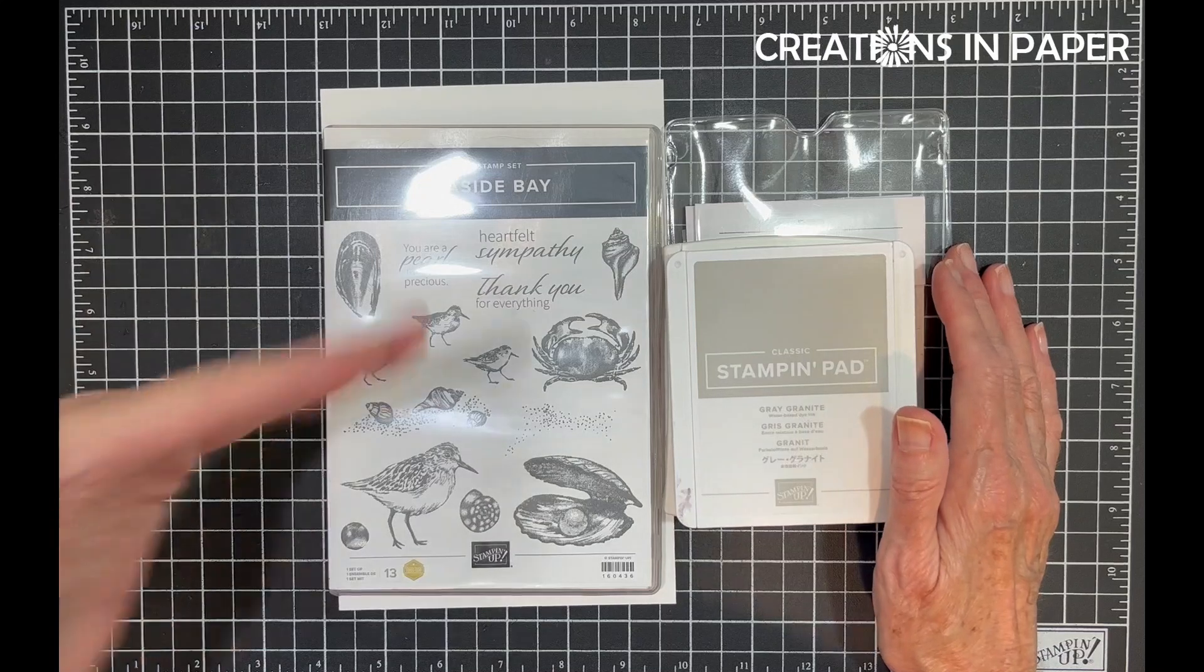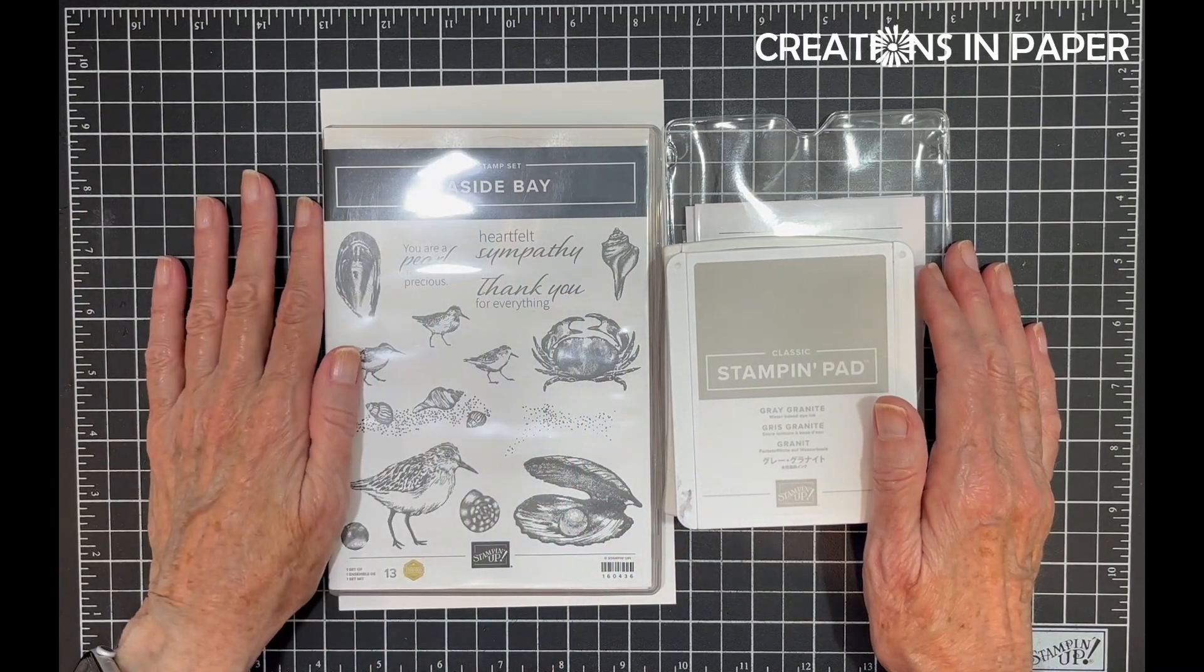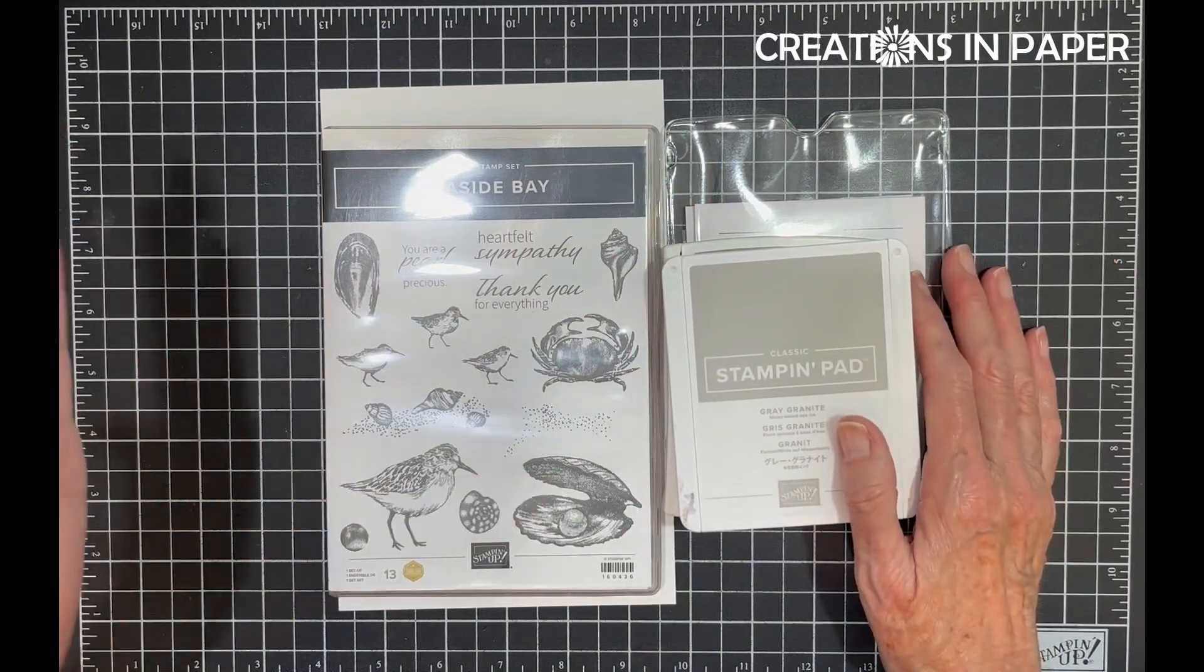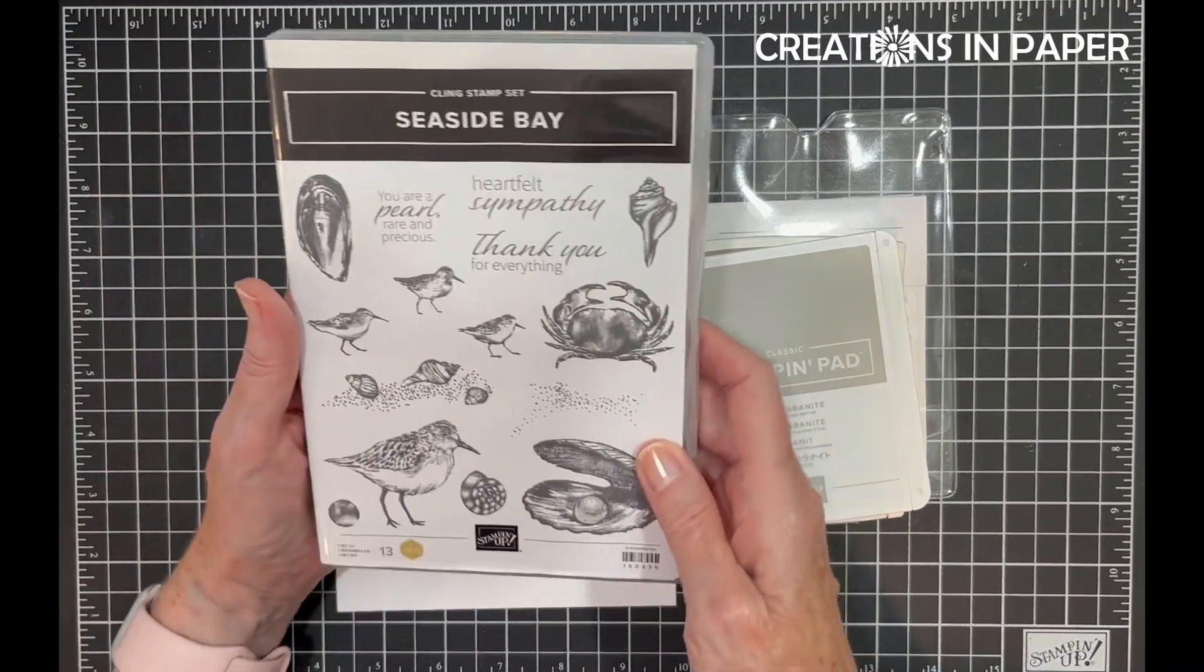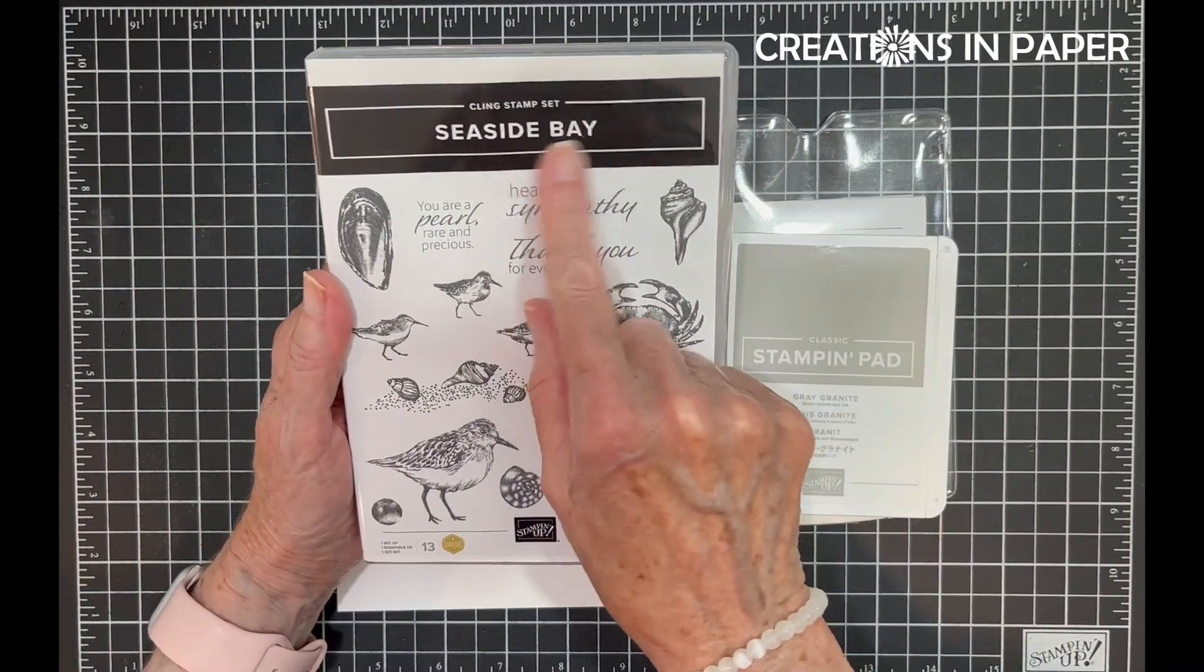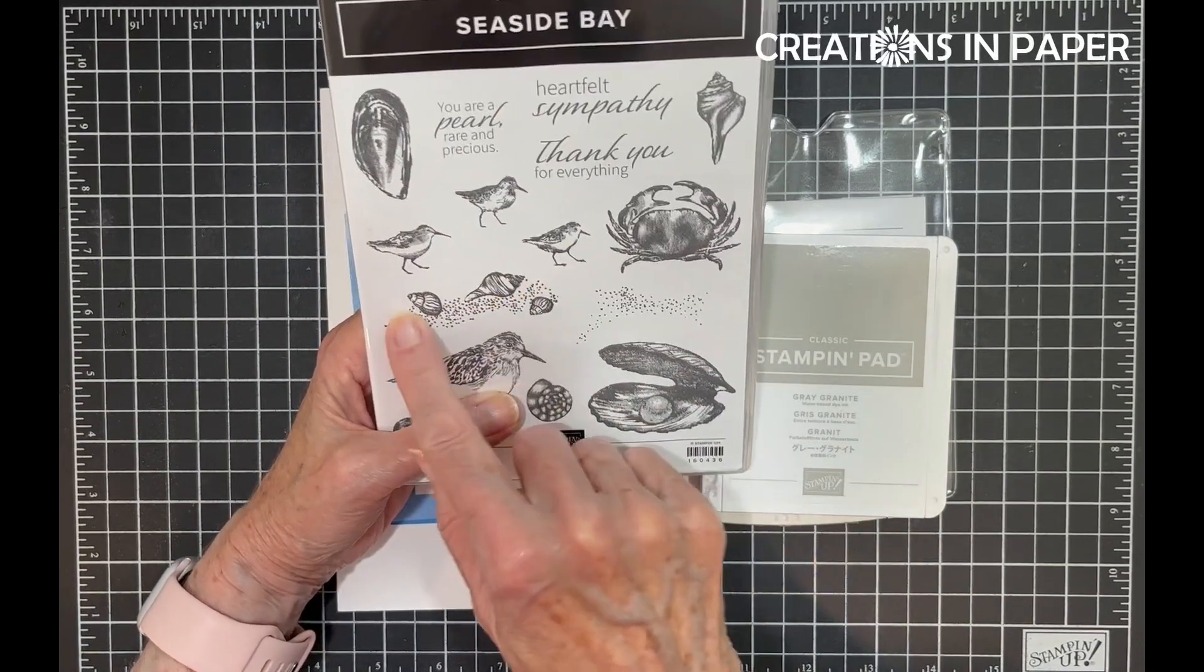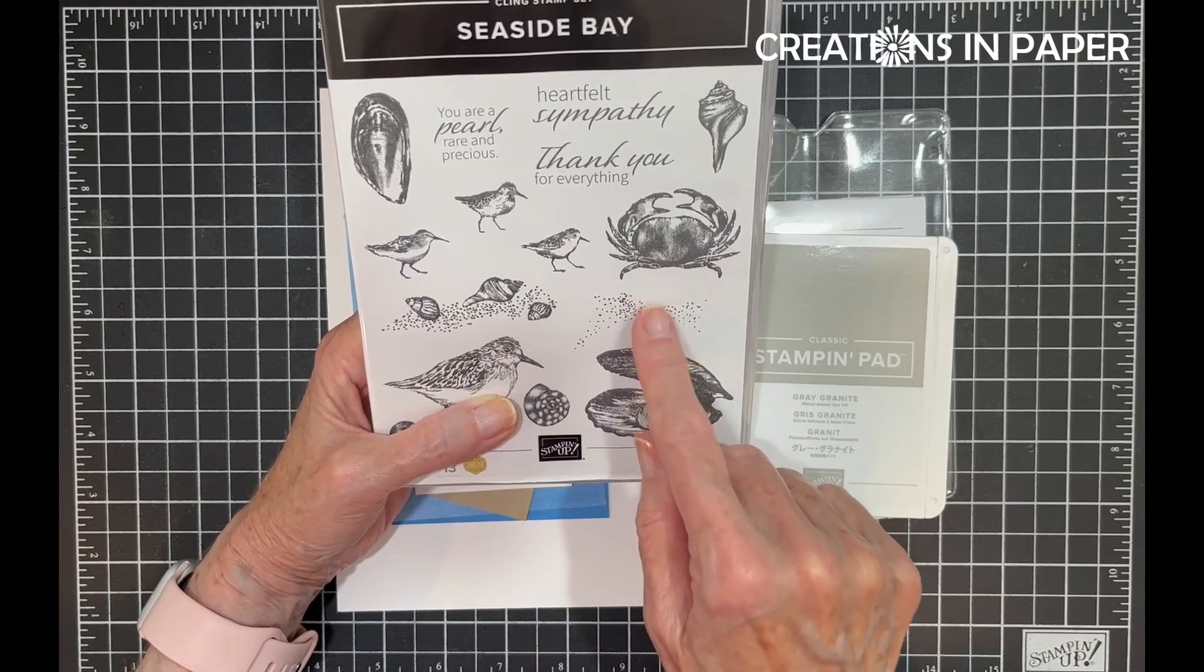What you can do is choose any of the masculine cards I've shared and use the same set over and over and you will have different ideas for them. For today's project I am going to be featuring the Seaside Bay stamp set. I'm going to use this one with the shells, I may pull in that one, not positive, and I'm going to use those cute birds.